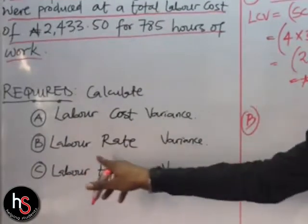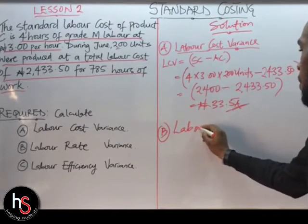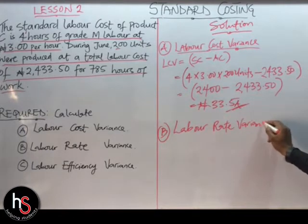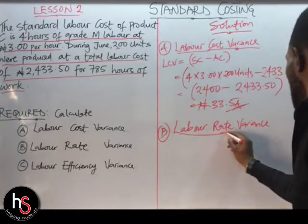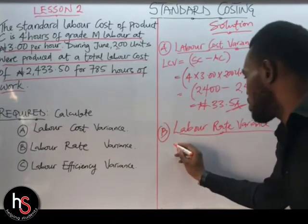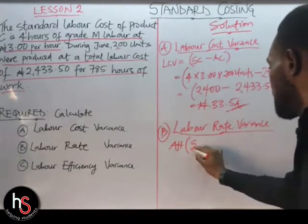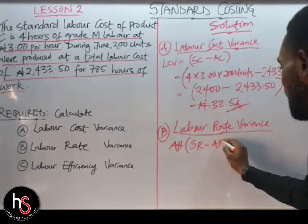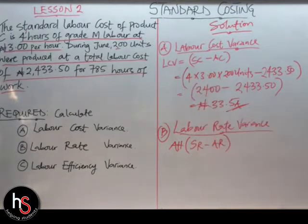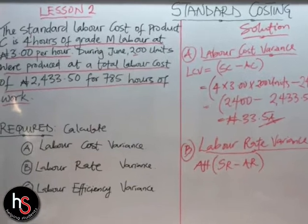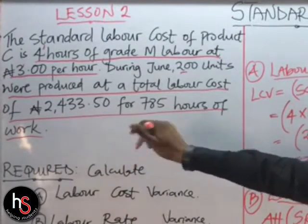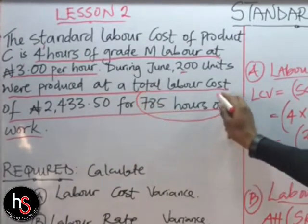The second question asks for the labor rate variance. The formula for labor rate variance is: actual hours multiplied by, in brackets, standard rate minus actual rate. What is our actual hours in this question? The actual hours is 785, because the question states 785 hours of work were required — everything stated here represents our actual cost.